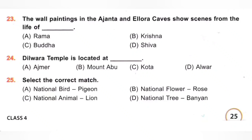25th. Select the correct match. A. National bird — pigeon: incorrect, national bird is peacock. B. National flower — rose: incorrect, national flower is lotus. C. National animal — lion: incorrect, national animal is Royal Bengal Tiger. D. National tree — banyan: correct match, our national tree is the banyan tree. Option D is the correct answer.